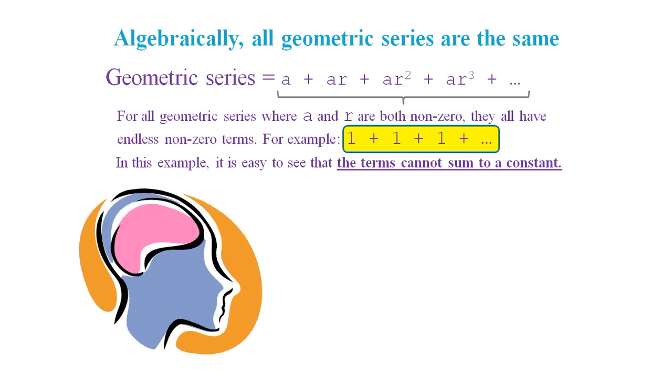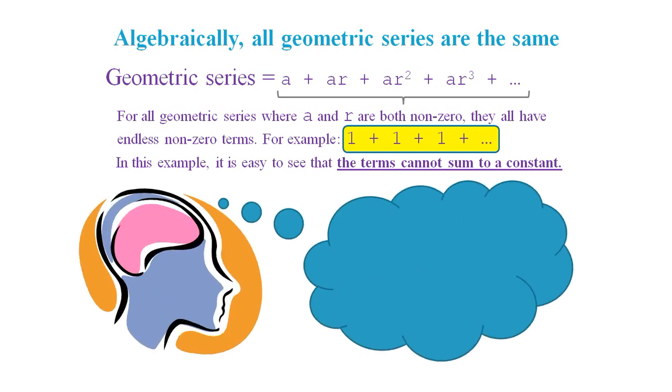But in our head, we have a brain, and this gives us an ability called imagination. Using this, we can imagine that endless non-zero terms can equal a constant, despite the mathematical contradiction and the logical absurdity. We can imagine this as long as the common ratio makes the terms get progressively smaller.